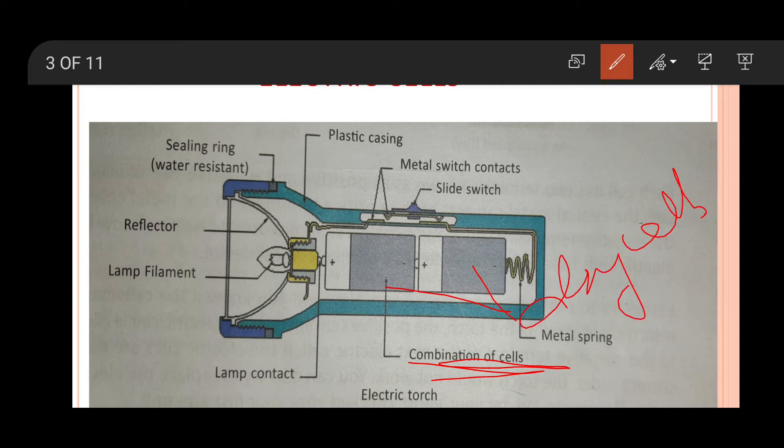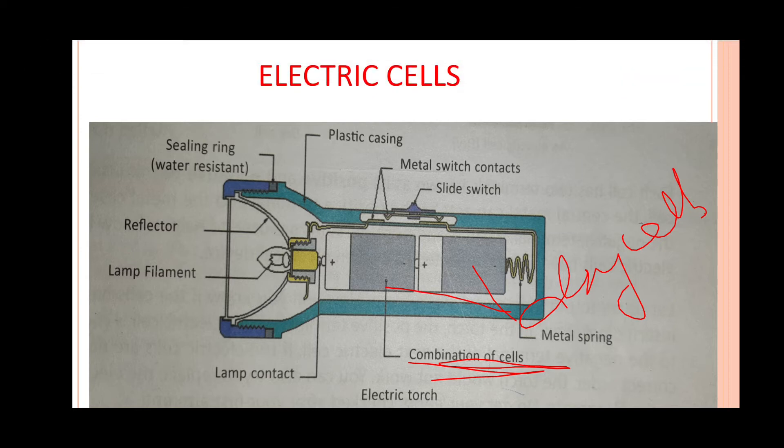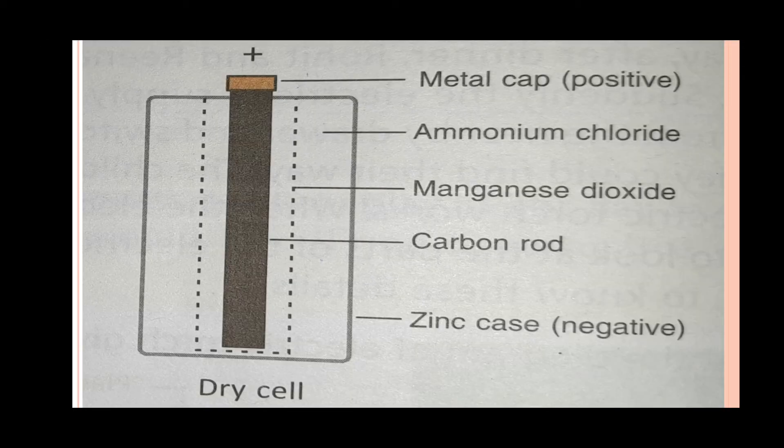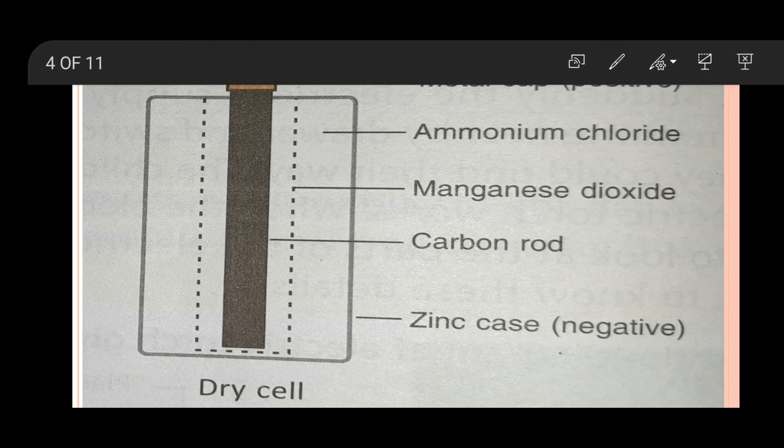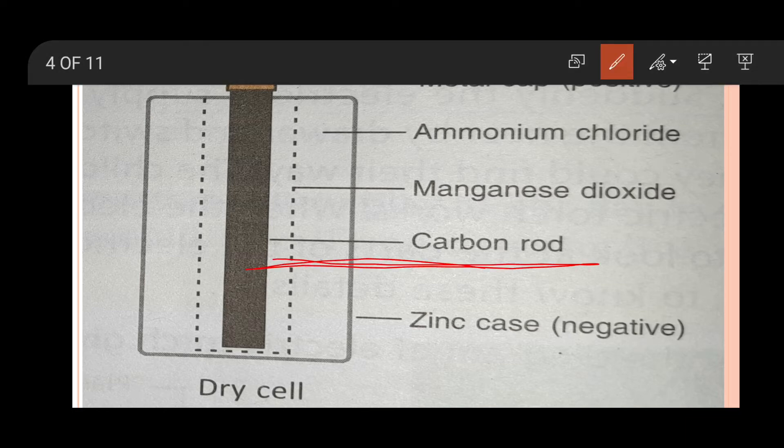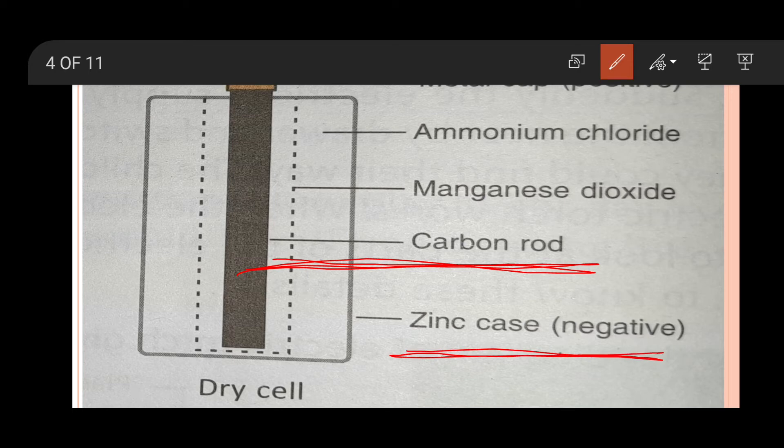Let's discuss this cell. At the top there is a metallic cap which is the positive terminal of this dry cell. Inside the cell, ammonium chloride and manganese dioxide are the two chemicals which are filled inside along with the carbon rod. It is a good conductor of electricity. The outer metallic case is known as the negative terminal of the cell and it is made up of zinc metal.